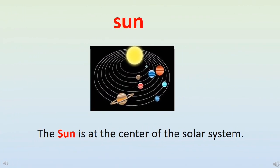The word is sun. Children, we all know about sun. Let's use sun in a sentence: the sun is at the center of the solar system.